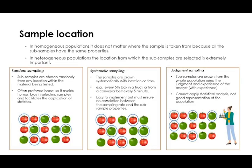You also need to decide the location where you are going to collect your sample. If the population is homogeneous, this is not really an issue. But if it's heterogeneous, you need to decide which sampling method to choose. There are three sampling methods: random sampling, which is most favorable as it avoids human bias and aids the application of statistics; systematic sampling, where you draw samples systematically by location or time, for example picking samples after every three tomatoes; and judgment sampling, which depends on the analyst's experience and objective. The problem with judgment sampling is that statistical analysis cannot be applied, as it doesn't represent a good representation of the population.